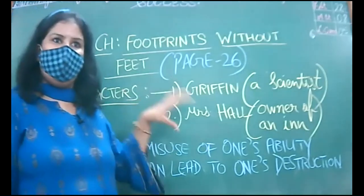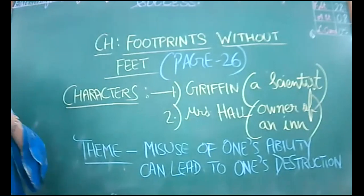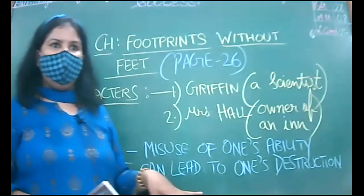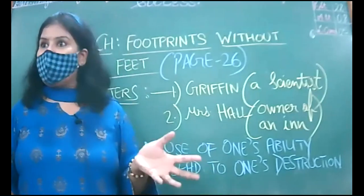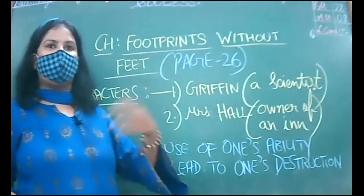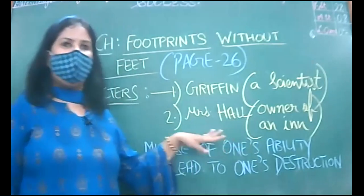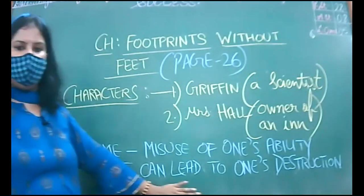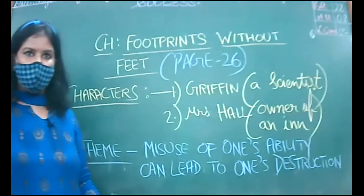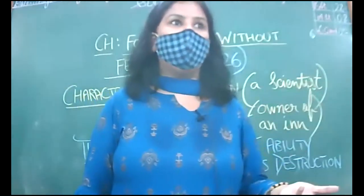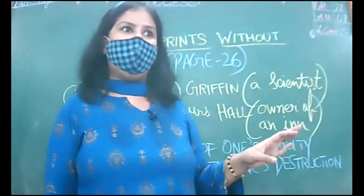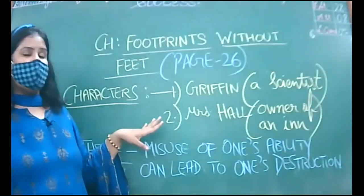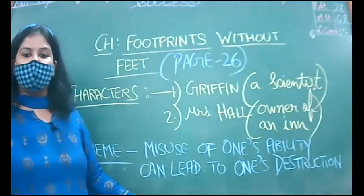The chapter starts when two boys are playing and they saw footprints being made on the soil but saw no one around. They were shocked — people seeing footprints would obviously associate it with a ghostly figure. The chapter starts in a confusing and intriguing way. The theme of the chapter is the misuse of one's ability — it can lead to one's destruction. There are very intelligent people who misuse their talent, and Griffin is that person who is going to misuse his ability, which will eventually lead to his own destruction.